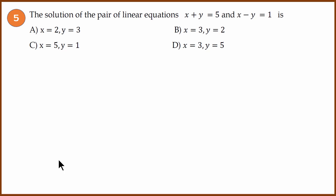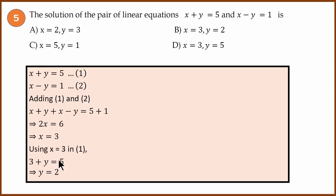Fifth question: Again, pair of linear equations. You have two equations: x + y = 5, x - y = 1. What is the solution? For the solution let's solve it properly. x + y = 5, call it equation 1. x - y = 1, call it equation 2. If you add 1 and 2, you get 2x = 6 or x = 3. If you use x = 3 in the first one, you get 3 + y = 5, which means y = 2. So the solution is x = 3, y = 2. The answer is B.